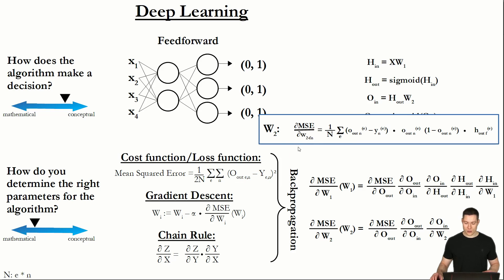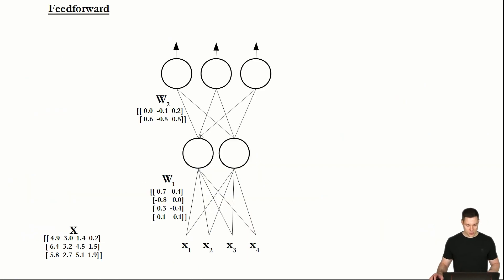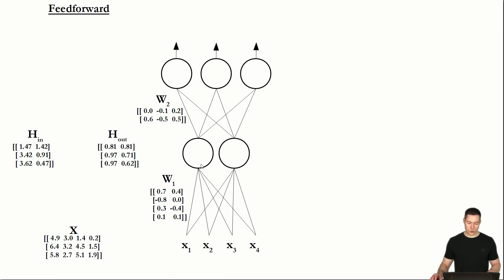Now we can think about how to transfer this equation back to dealing with matrices. Let's go back to the overview diagram and quickly go through the feed-forward algorithm again. We multiply the input matrix with weight matrix 1 to get the hidden layer inputs, put those into the sigmoid function to get the hidden layer outputs, then multiply that matrix with the next to get the output layer inputs, and apply the sigmoid function again.